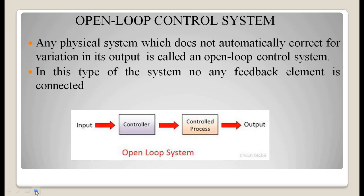The first type: open loop control system. Any physical system which does not automatically correct for variation in its output is called an open loop control system. In this type of system, no feedback element is connected. As shown in the diagram, a controller receives an input from any change in the system, feeds that input to the controlled process, and the process gives us an output. This is an open loop system.